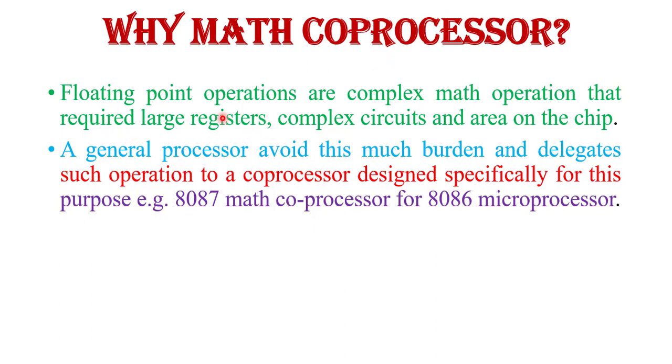Floating point operations are complex math operations that require large registers, complex circuits and area on chip. A general processor avoids this much burden and delegates such operation to a coprocessor designed specifically for this purpose, that is 8087 math coprocessor for 8086 microprocessor.